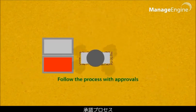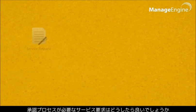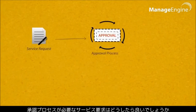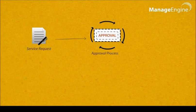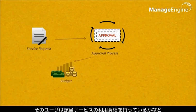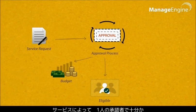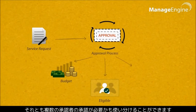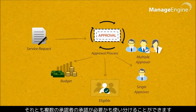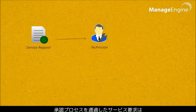The service request sometimes needs an approval process before the service is delivered. The approval process will make sure that the request fits into the budget and the user is eligible to get the service. Based on the service ordered, the approval can either be from a single approver or multiple approvers. The service request will then be assigned to a technician after the approval process is completed.